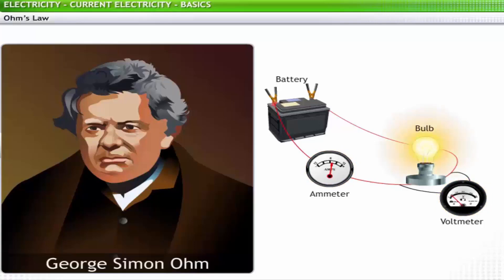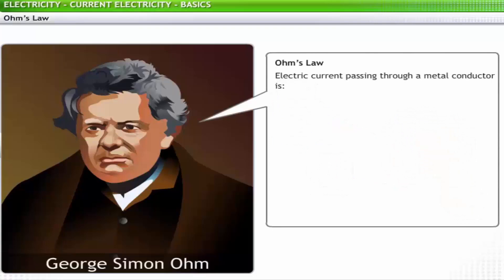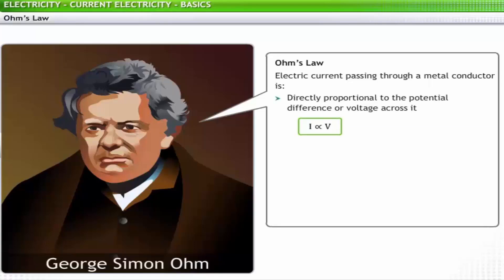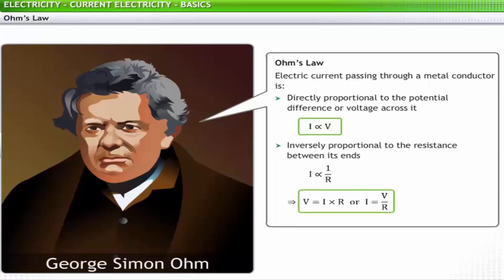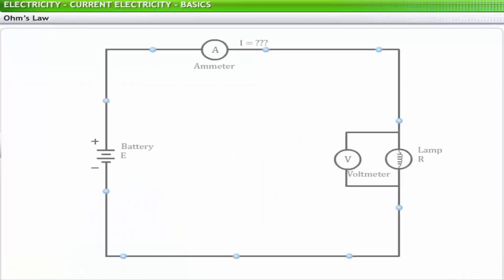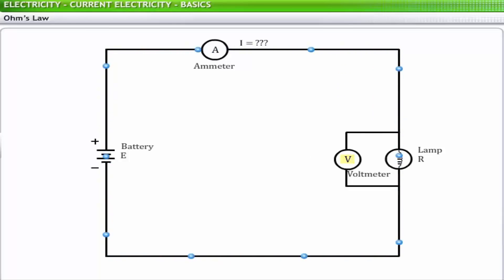Ohm's law states that electric current through a metal conductor in a circuit is directly proportional to the potential difference or voltage across it and inversely proportional to the resistance between its ends. Thus, according to Ohm's law, voltage V is equal to the product of electric current I passing through the conductor and the resistance R offered by it.